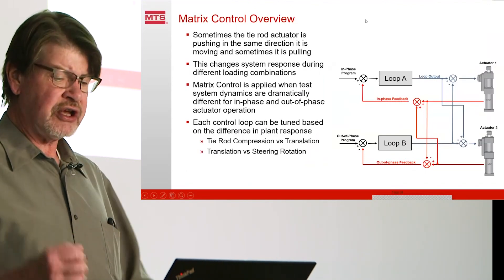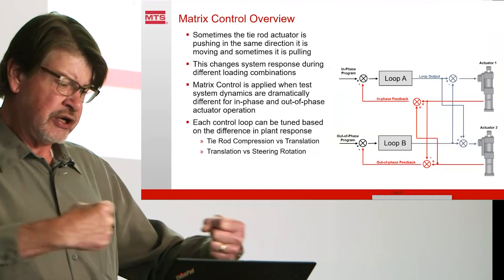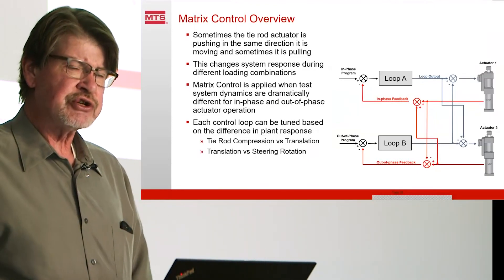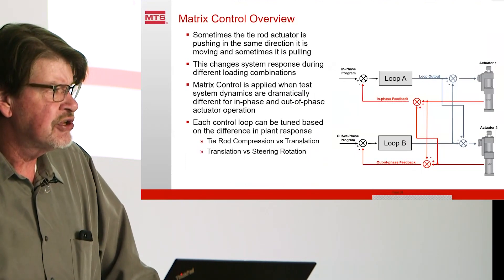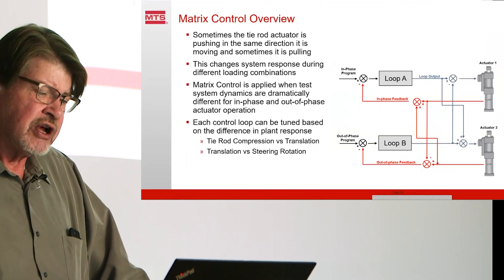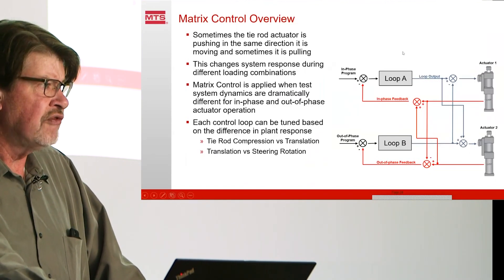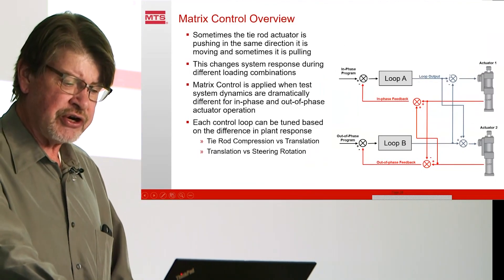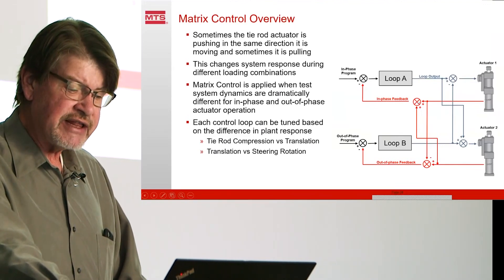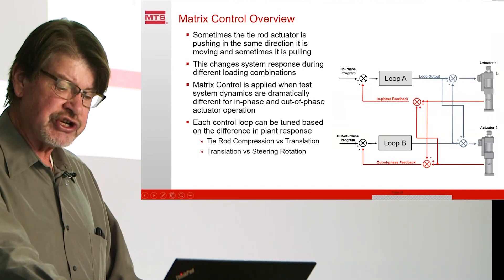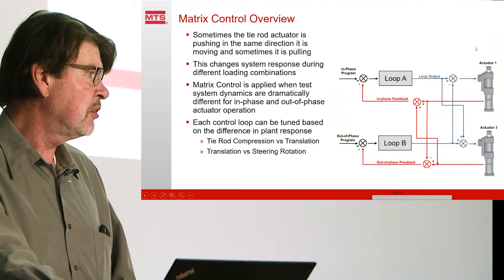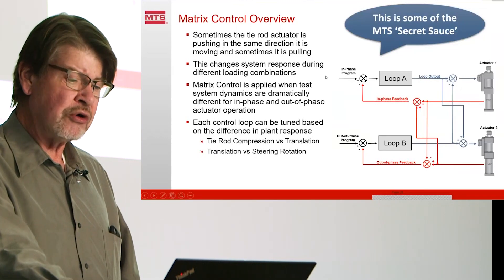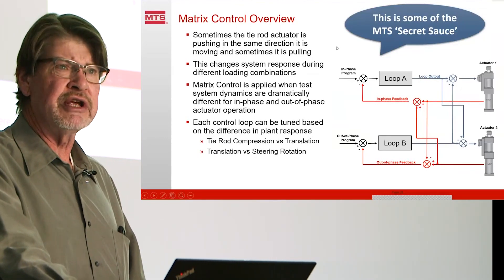What exactly does that mean? Well, if we think about running a system with a ball joint and tie rod, we can have tension-compression and translation. When we have both of those together, sometimes actuators are pushing in the direction they're traveling and sometimes pulling — that's a different gain situation in the control loop and makes control very difficult. What MTS does is matrix control, where we sum the data for both compression and tension and the translation, and divide that out to command the servo valves so each actuator understands what it will be doing. The control stays uniform and we maintain good accurate data content. This is something MTS does that not many others do — what we call the MTS secret sauce.